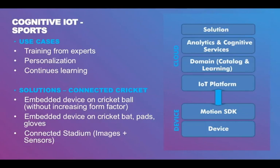To realize this use case, you start by putting embedded devices inside the cricket ball without significantly increasing the form factor. There are a lot of regulations on the form factor of cricket balls, so you're looking at minute embedded devices which provide at least a 6-axis sensor for accelerometer and gyroscope to identify any movement in 3-dimensional space.